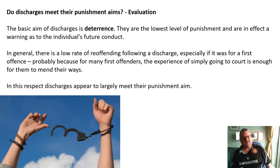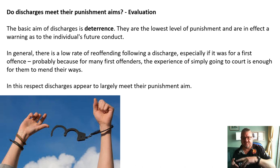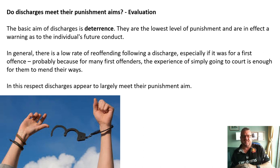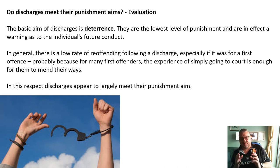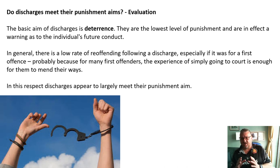So there you have it — the four different sentences given out in courts: imprisonment, fines, community sentences, and discharges — related to the five aims of punishment. You can evaluate however you want, but please ensure you've got some stats and evidence to support any argument you give, either for or against. I hope that's helped.